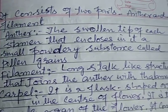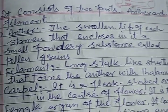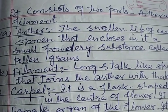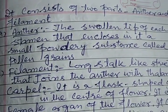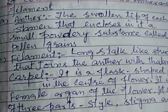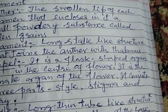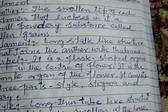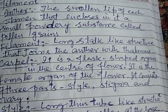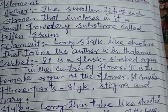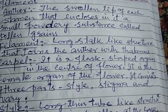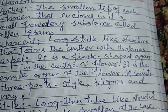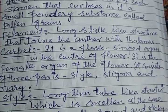The two parts of a stamen are: the anther, which is the tip of each stamen that encloses a small powdery substance called pollen grains; and the filament, which is the long stalk-like structure of the stamen.